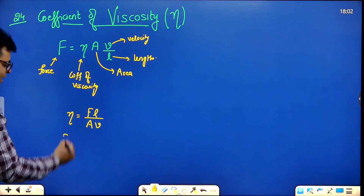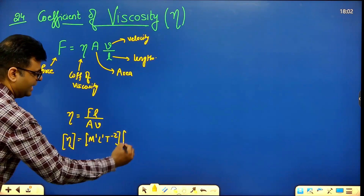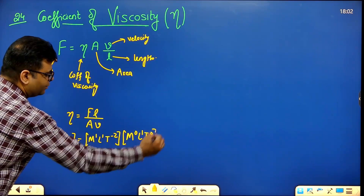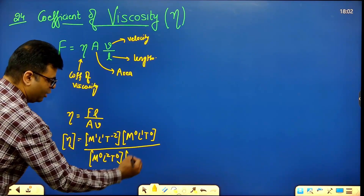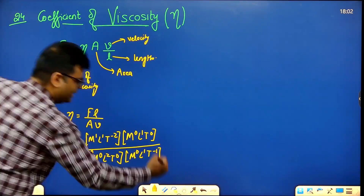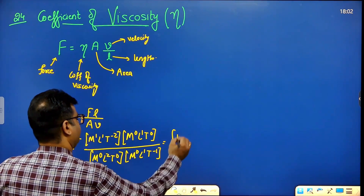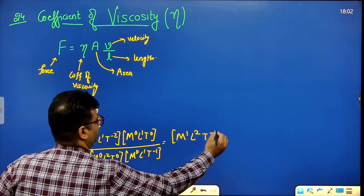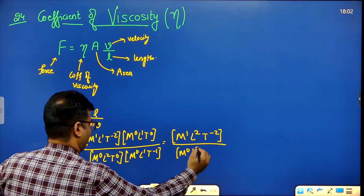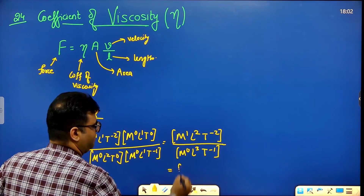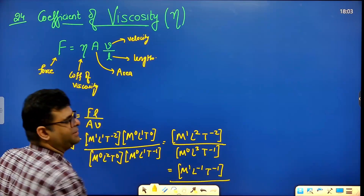Now find the dimensions of eta: force is M¹L¹T⁻², length is M⁰L¹T⁰, area is M⁰L²T⁰, velocity is M⁰L¹T⁻¹. Numerator: M¹L²T⁻². Denominator: M⁰L³T⁻¹. Subtracting powers: M¹L⁻¹T⁻¹. These are the dimensions of coefficient of viscosity.